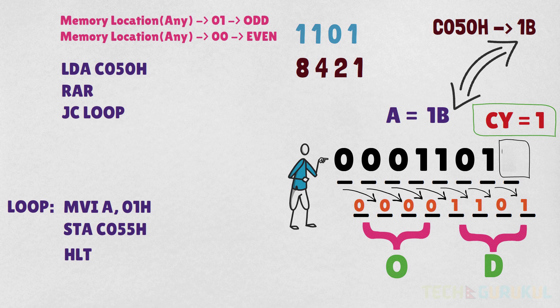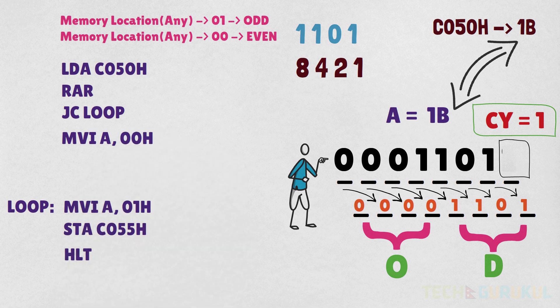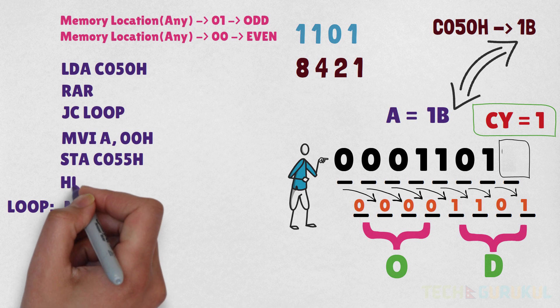We need to know that C055H is 1. We need to check the condition for even number. What we need to do is jump if carry to loop. For the even number condition, we use MVI A, 00H, then STA C055H.